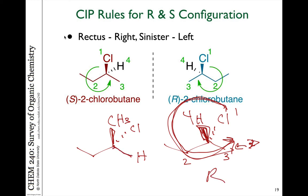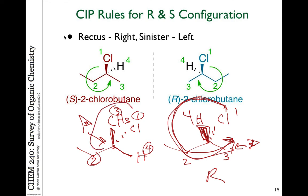When the lowest priority group is in the plane of the paper, it's a bit more difficult because you have to envision from the side. Going from one to two to three, it's going essentially back and then forward, so from your viewpoint you're going counterclockwise. So this is the S direction.